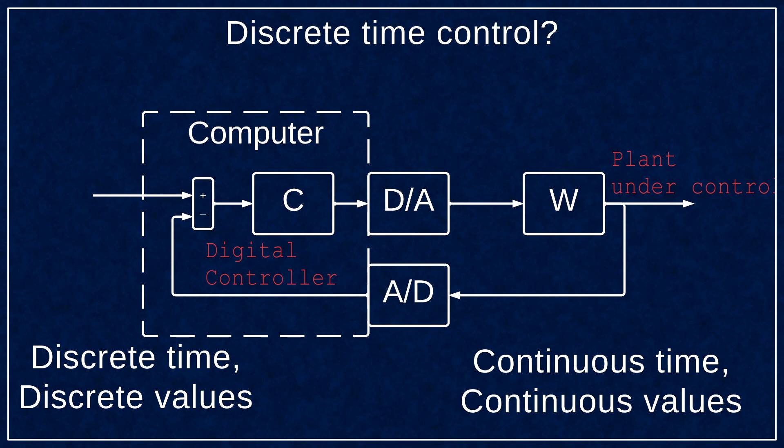Now discrete time control deals with half of these issues. It considers the sample time based updates of the computer, but it does not deal with binary values or finite precision.